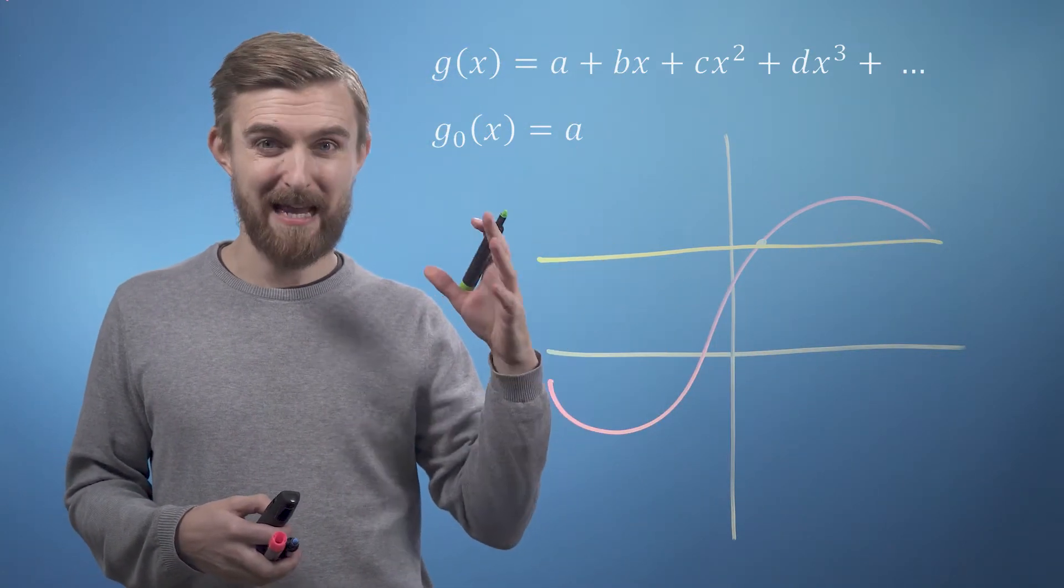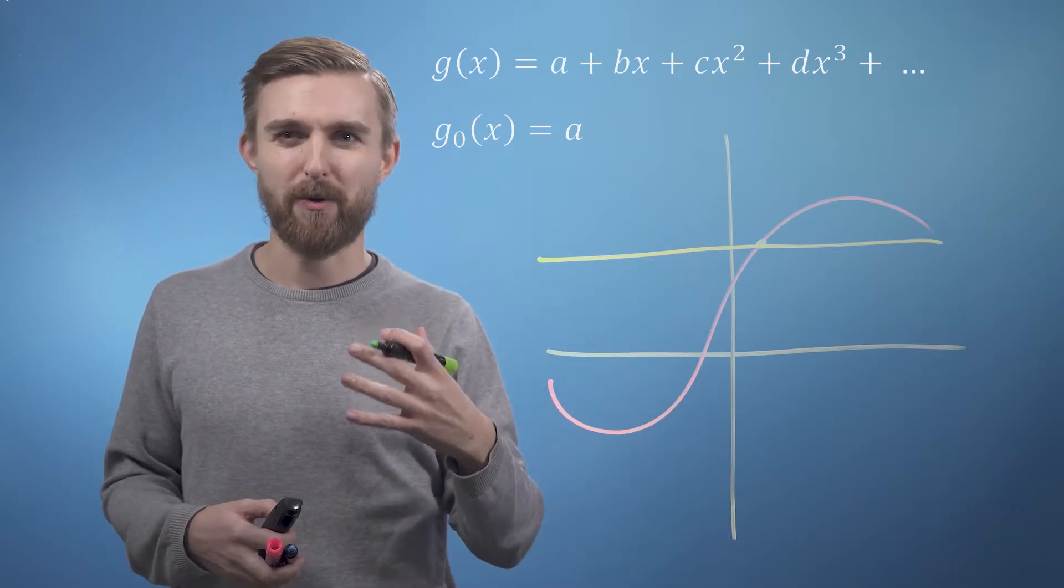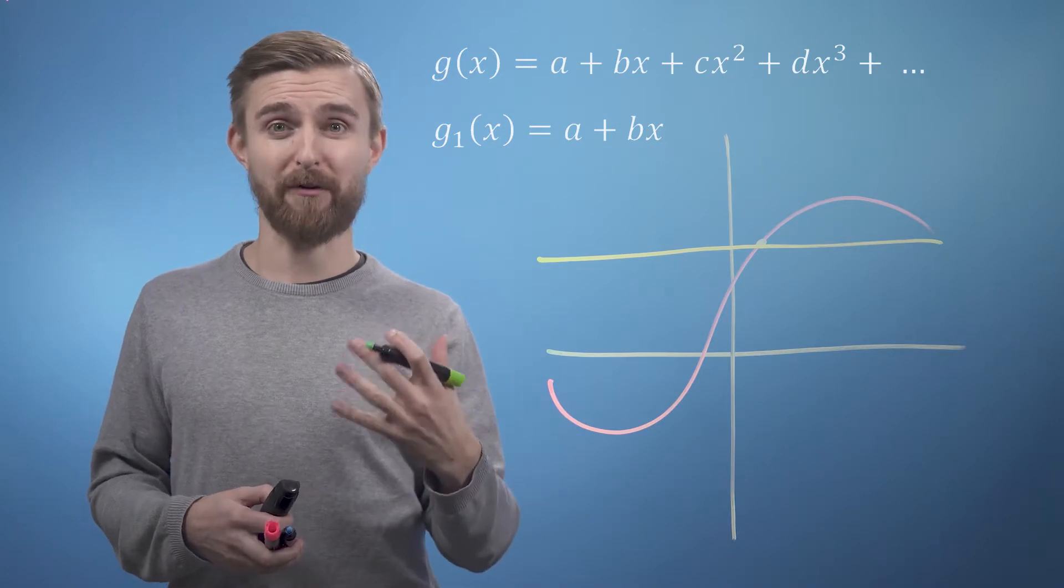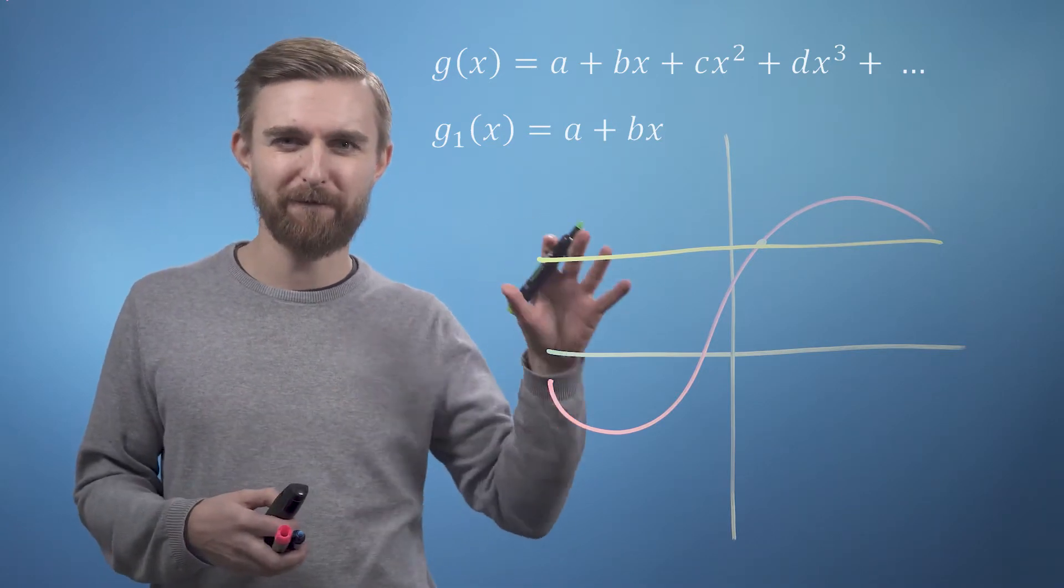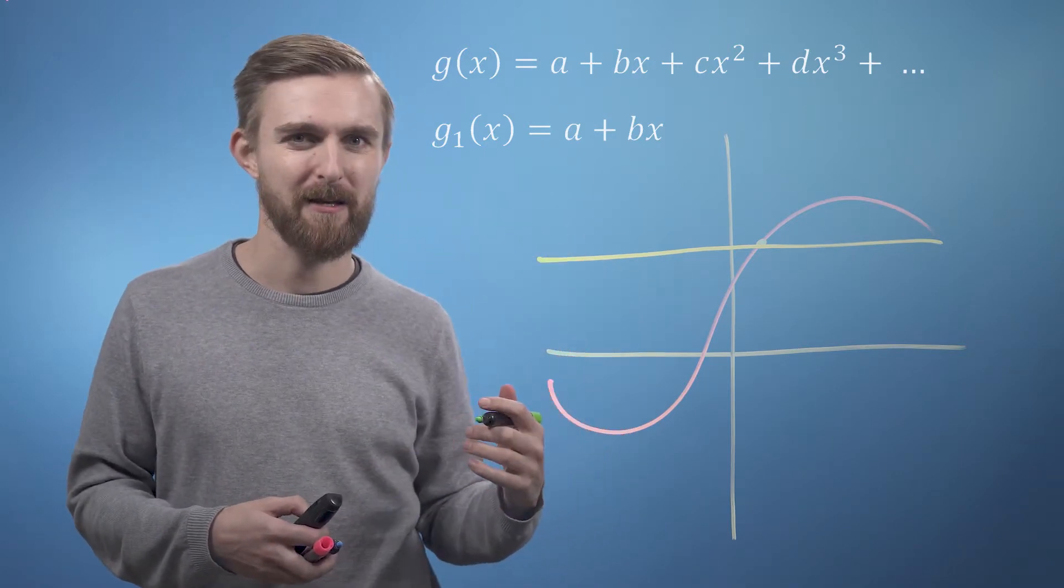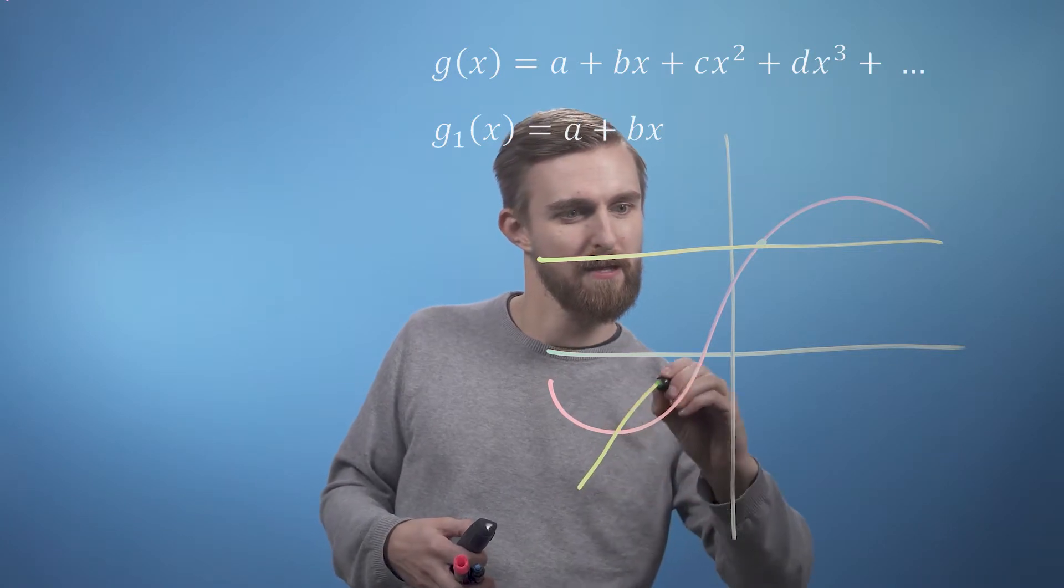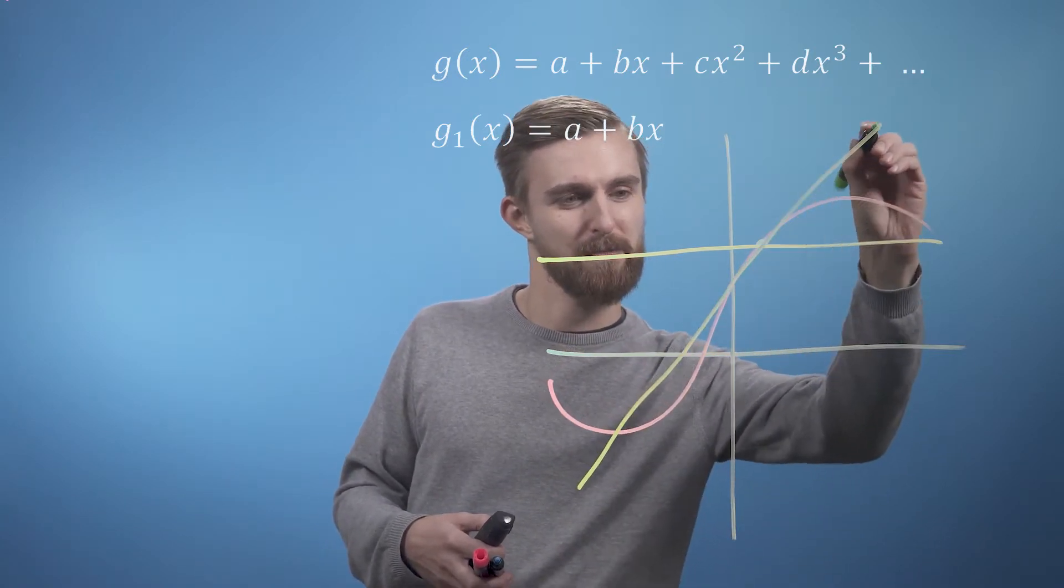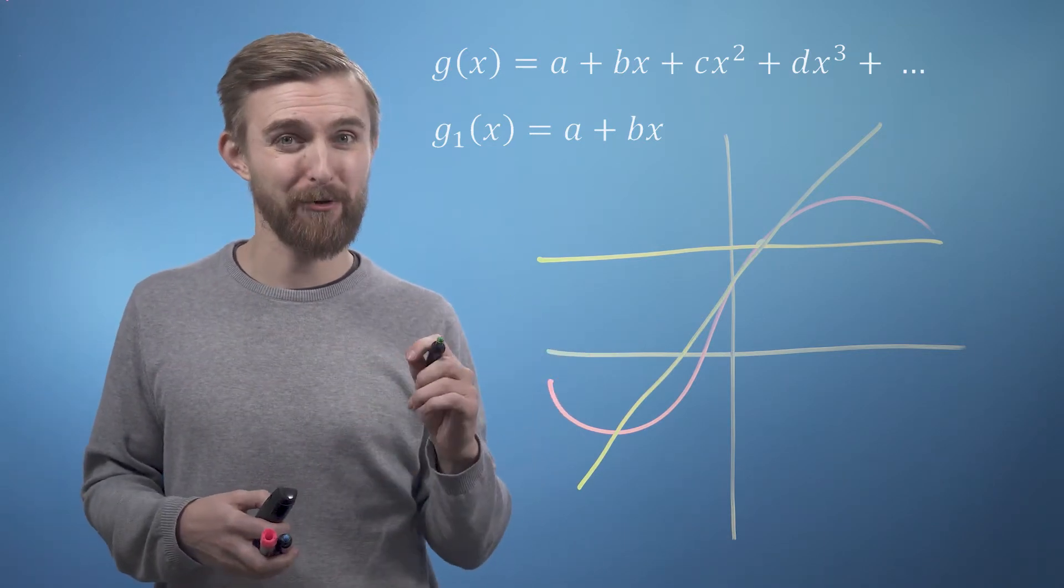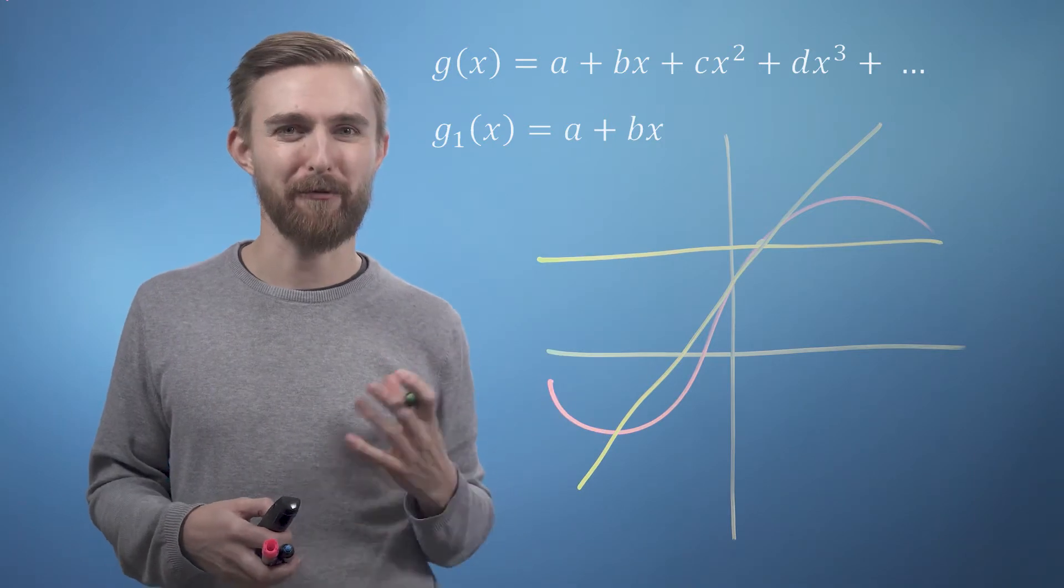Clearly this hasn't done a great job at approximating the red curve, so let's now go to our first order approximation. This thing can also have a gradient, and if we'd like to match our function at this point it should have the same gradient, so we can have something a bit more like this which is supposed to be a straight line. Clearly our approximation has improved a little in the region around our point, although there is still plenty of room for improvement.